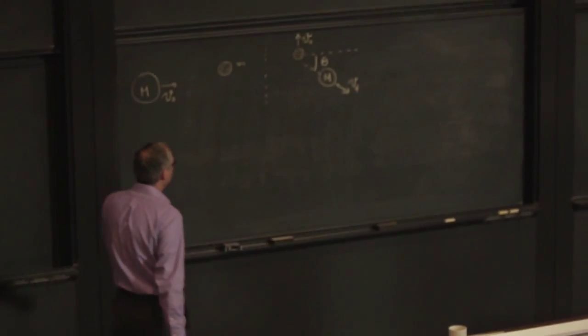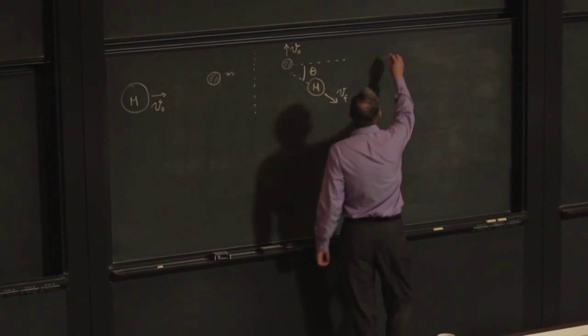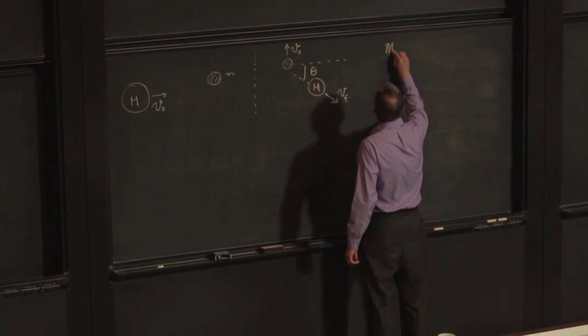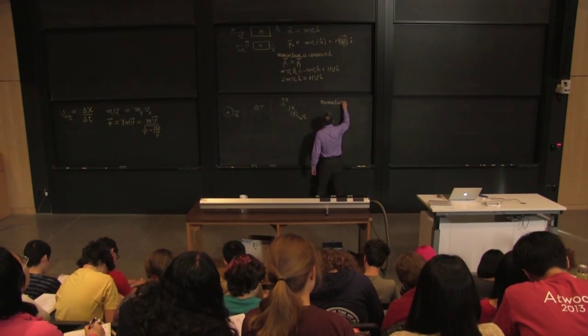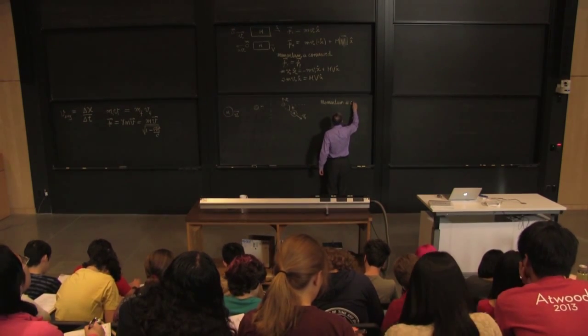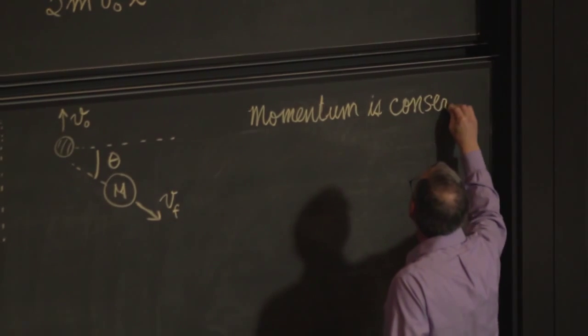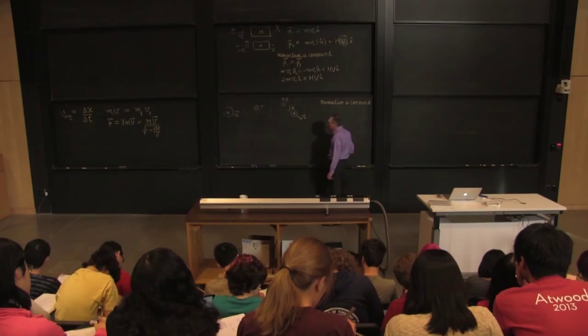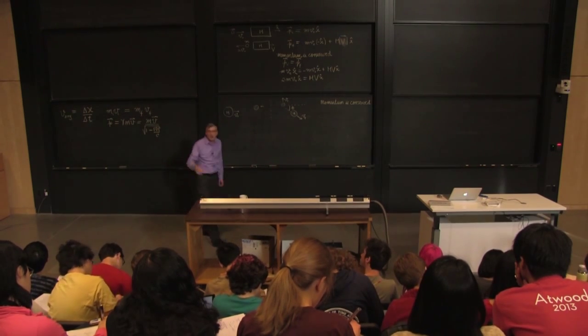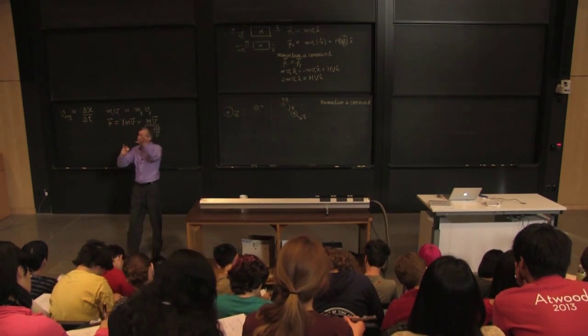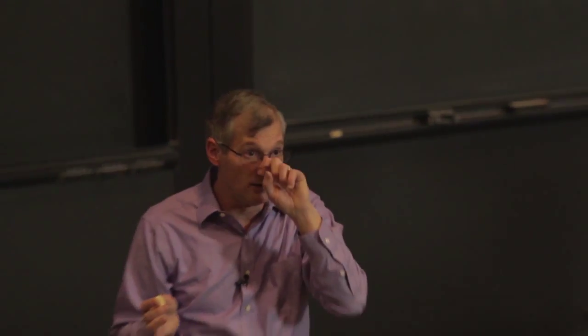So the key principle, the fundamental principle, is momentum is conserved in this collision. That's where I want to start. We're going to reason up from first principles. Momentum is conserved. And now we can entertain, yeah, maybe it's a good idea. Maybe we should think about a coordinate system. What would that help me do?